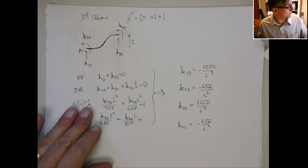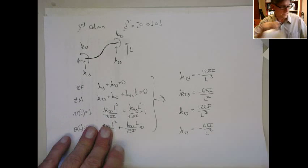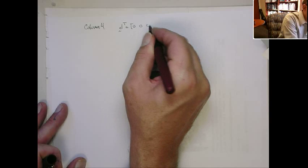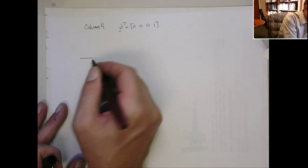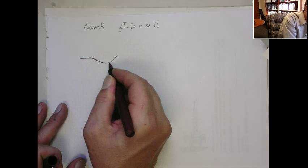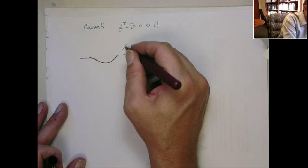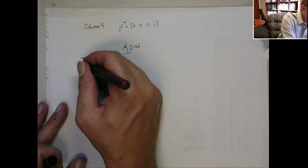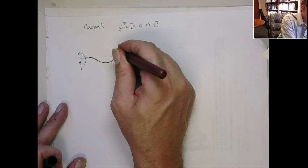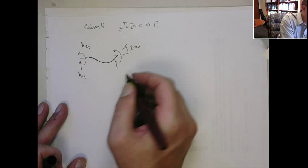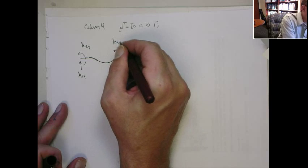And then the last one we do is the fourth column. Here the displacement vector is 0, 0, 0, 1 — so that picture we're fully fixed on one side, and then on the right side we have a positive rotation of one radian, so it looks something like this. The deflection is zero. When I plug this in, we can get the forces and the moments, and it's going to be the fourth column: K1,4, K2,4, K3,4, and K4,4.